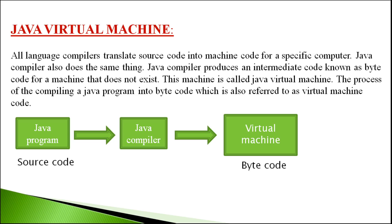When we use Java, we use the compiler to convert the source code into byte code. When we use the Java Virtual Machine, we use the compiler to convert the byte code into machine code for a specific computer.